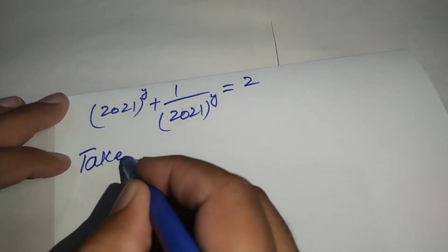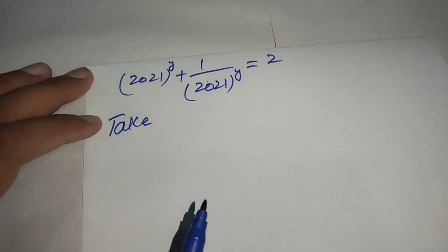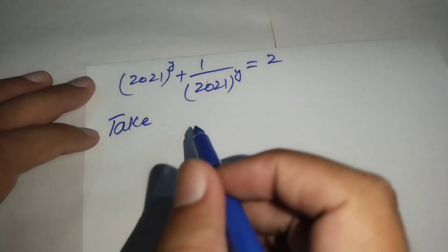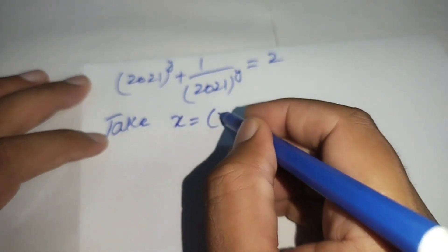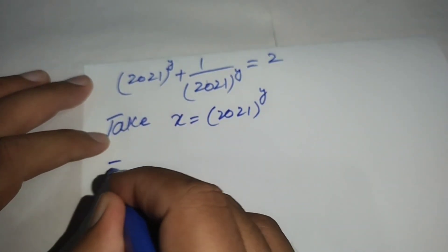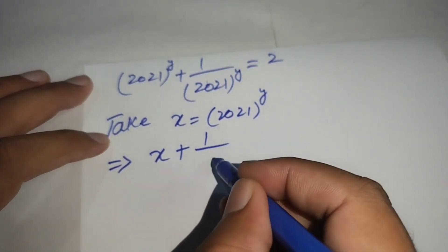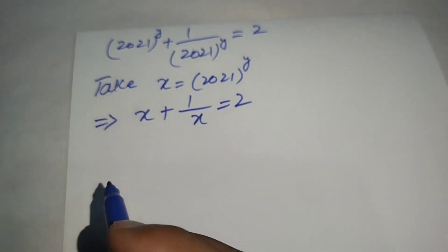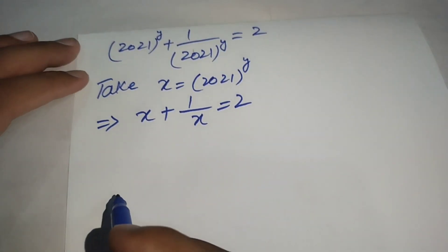To simplify further, we let x = 2021^y. Our equation then becomes x + 1/x = 2.